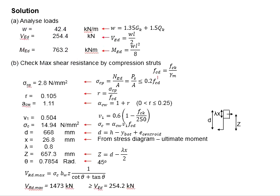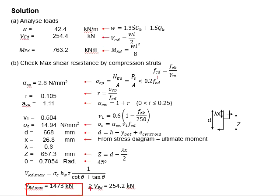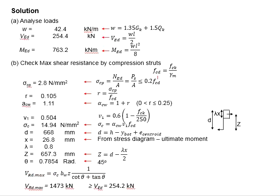The next step is to check the maximum shear resistance of the compression strut. This step is important — you will need to make sure your maximum shear capacity is greater than VED. If the maximum capacity is less than VED, you will need to repropose the section. We will use these equations to determine the VED maximum. Consider theta equals 45 degrees, as it gives the higher shear resistance of the member, which if converted into radians will be equal to 0.7854.